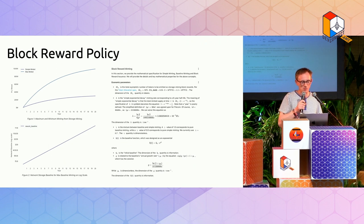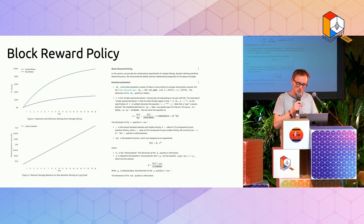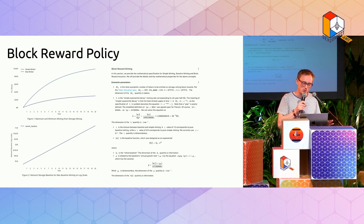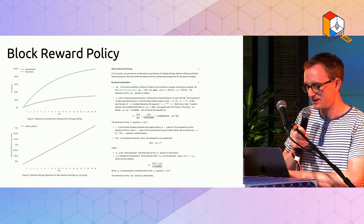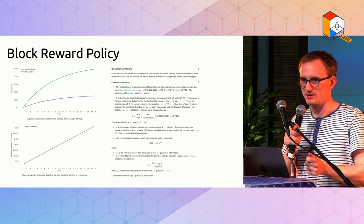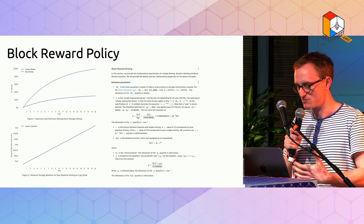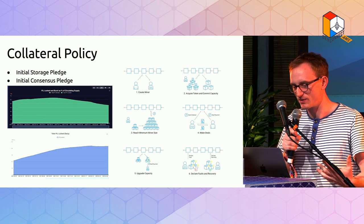In Filecoin we have a simple block reward mechanism — standard exponential decay — but this is combined with a second mechanism called baseline minting. Simple minting bootstraps a project by giving large rewards to early participants, but that's not ideal for long-term utility. The baseline minting component changes the rate at which rewards can be won: if the network is growing a lot, more rewards are emitted; when the network becomes very large, it slows down again, giving a dynamic response in block rewards.